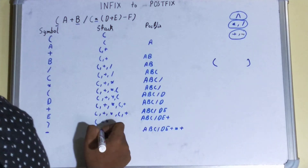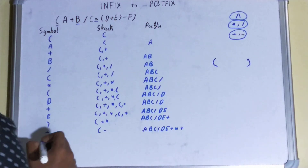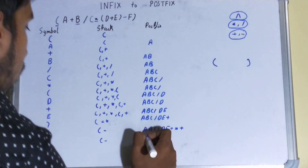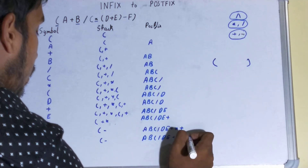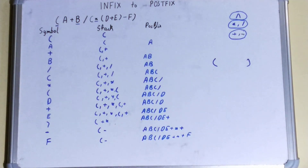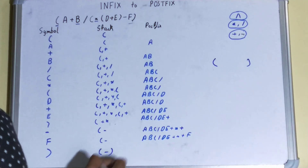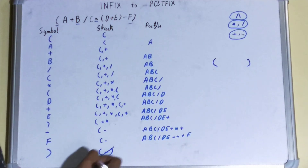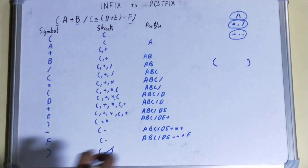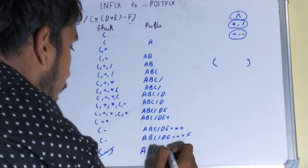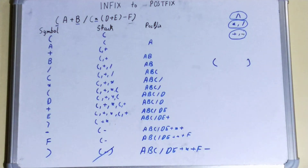We pop plus out and then stack minus in. Next comes F, which is an operand, so we add it to the postfix column: A B C / D E + * + F. Finally we encounter the last closing bracket, so we pop whatever was inside the outer brackets — which is minus — to obtain the final postfix expression: A B C / D E + * + F -.